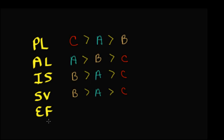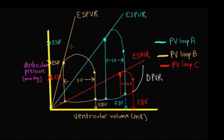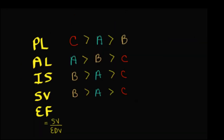For ejection fraction — the ratio of stroke volume to end diastolic volume — PV loop B has the biggest stroke volume and smallest EDV, while PV loop C has the smallest stroke volume and the largest EDV. So the ejection fraction ranking is B greater than A greater than C.